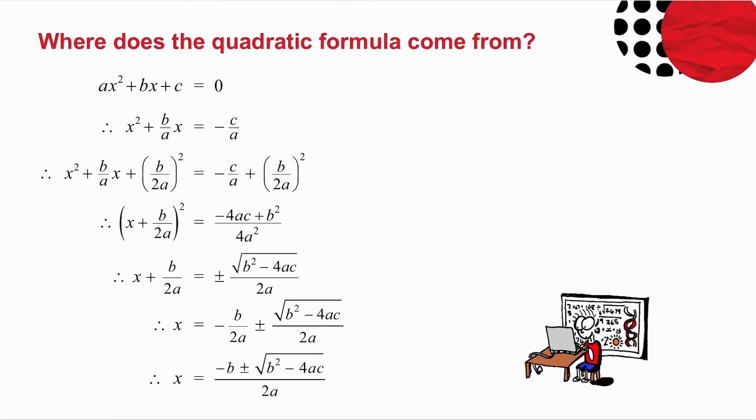Let me just go through it very briefly again. The first thing we did was divide through by the coefficient of x squared, so I divide by a with every term and I take the constant to the other side.